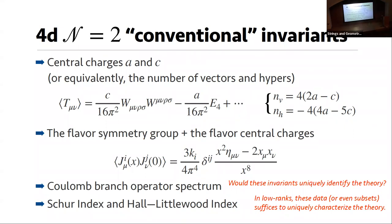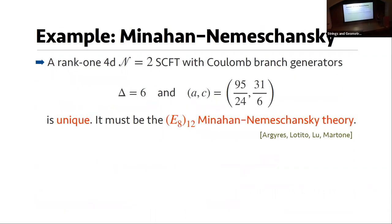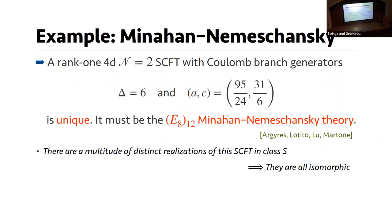Do these invariants uniquely identify the theory? I would love to say yes, but of course not generically. However, we know that for very low ranks, even a subset of this data suffices to uniquely characterize a theory. The easiest example is the Minahan-Nemeschansky theory. For rank-one N=2 SCFTs, given the Coulomb branch generator and the central charge a, this is indeed unique — it is exactly the E8 Minahan-Nemeschansky theory. So we needed only this subset, and there are multitudes of distinct realizations in class S that we can say are all isomorphic.